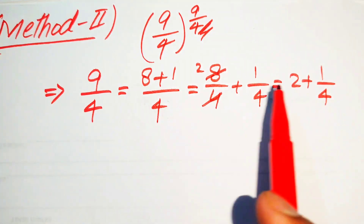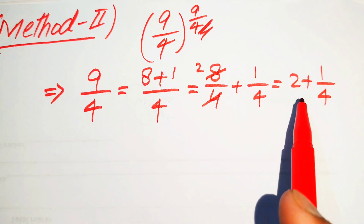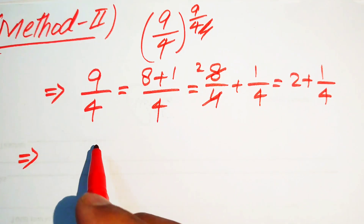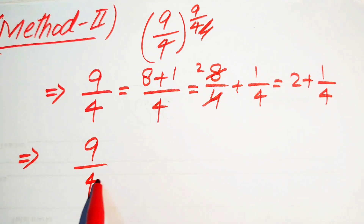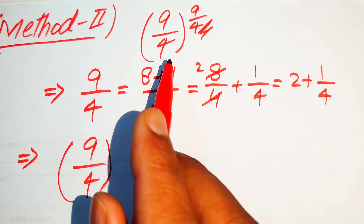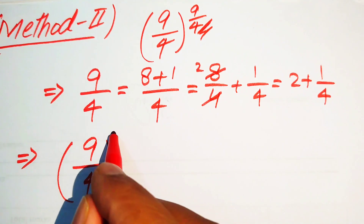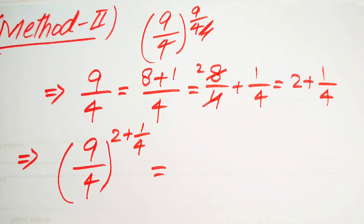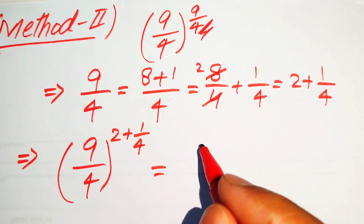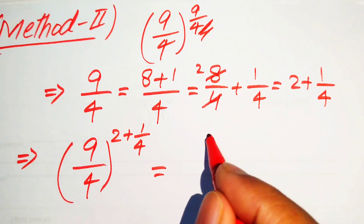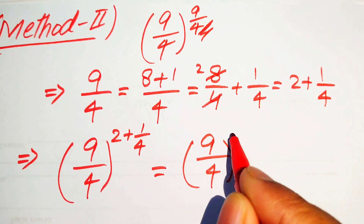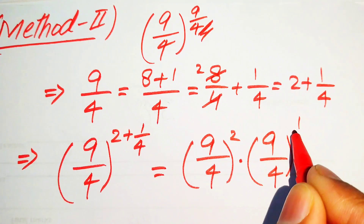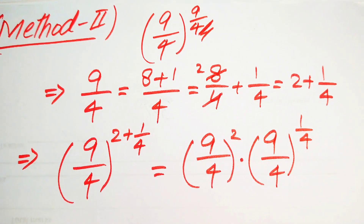We substitute the exponent 9/4 = 2 + 1/4 back into the expression. So the base 9/4 is raised to 2 + 1/4. We then break the exponent and write it as (9/4)² · (9/4)^(1/4).